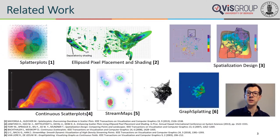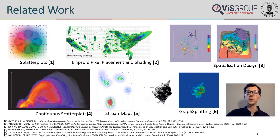A second work that inspired us was ellipsoid pixel placement in combination with shading. Related to their approach, we believe that additional illumination cues can emphasize local variation and highlight structures. A study that also influenced our design process was a spatialization design paper comparing points and landscapes. Within their setup, we consider the choice of the right camera position as especially relevant, since occlusions can much more easily occur in 3D than in 2D.